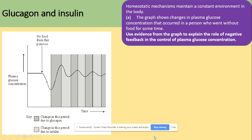Our previous video cut off when we were looking at glucagon and insulin. The graph shows changes in plasma glucose concentrations that occurred in a person who went without food for some time. You need to use evidence from the graph to explain the role of negative feedback in the control of plasma glucose concentration. On the graph we have time against plasma glucose concentration. Changes here are due to glucagon — the dark bands — and the lighter bands are due to insulin.